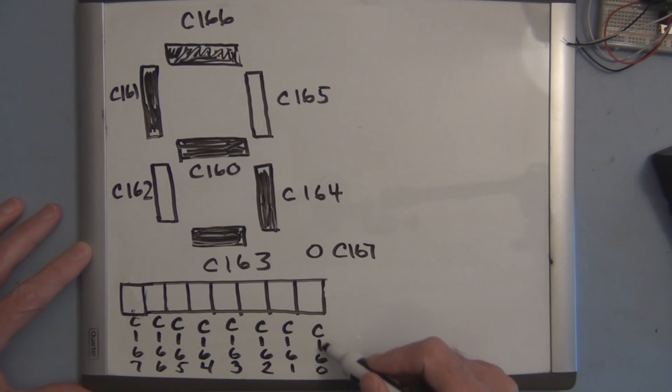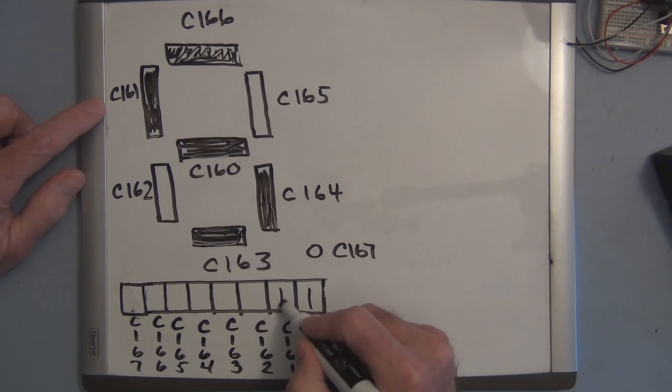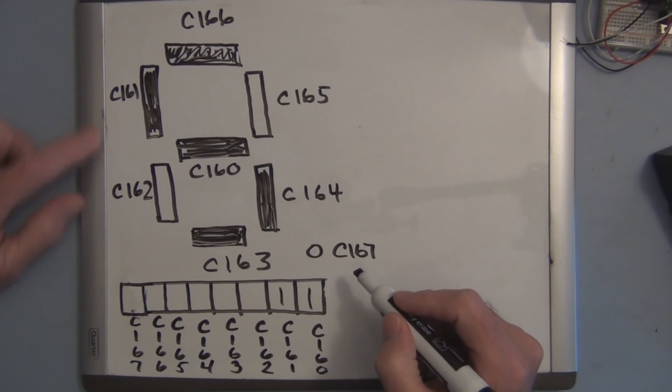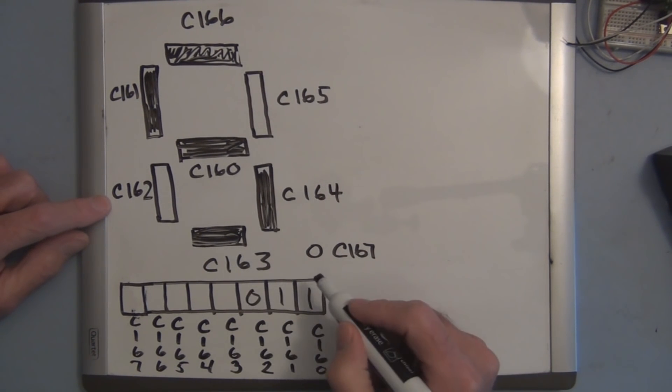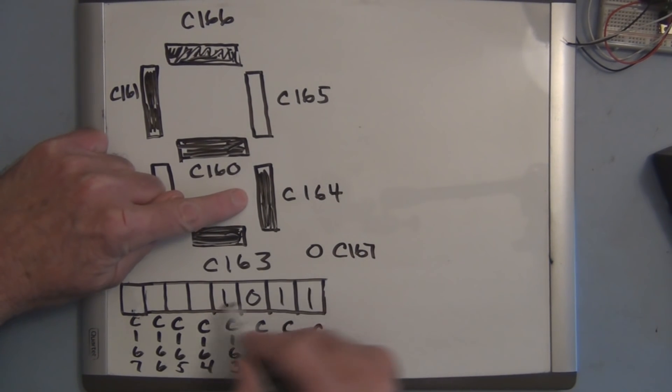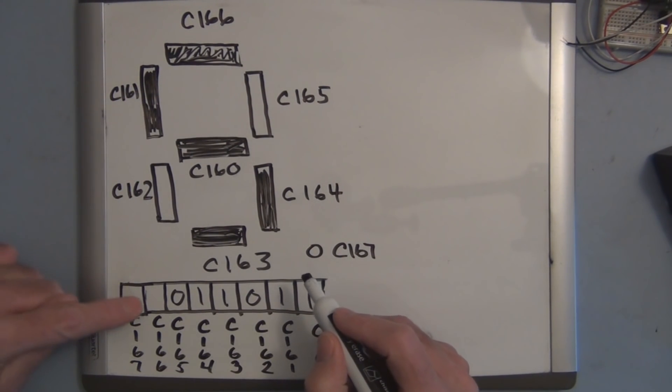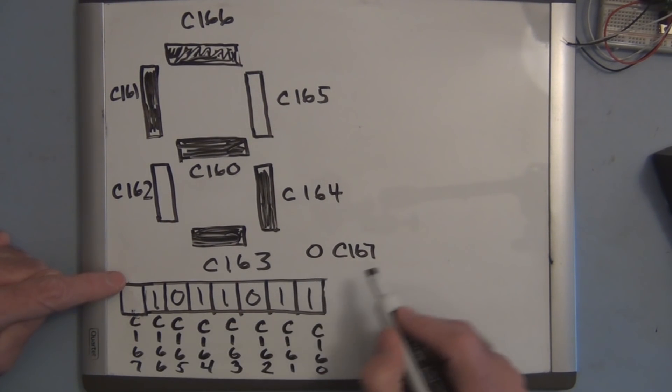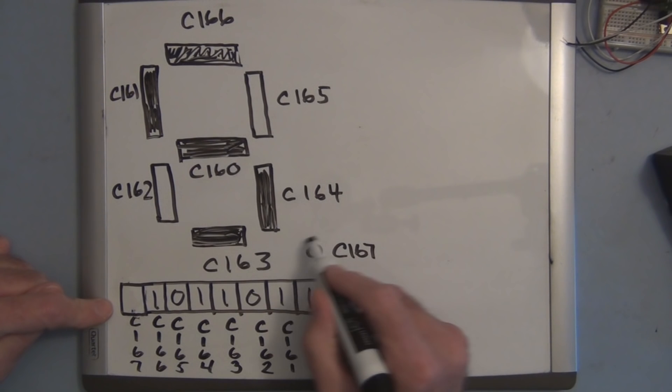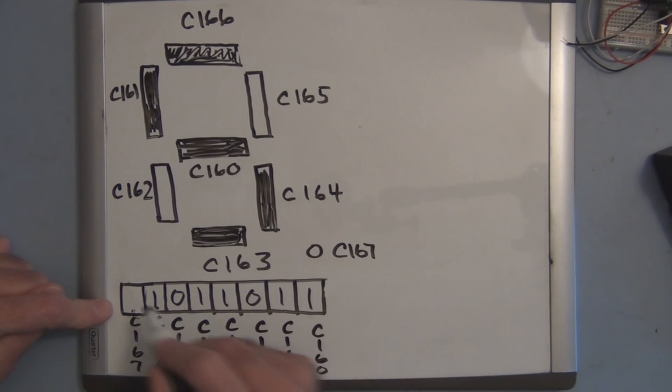So we would have C160, that would be a 1 in that position. 161 would be a 1 in that position, 162 is a 0, 163 a 1, 164 a 1, 165 a 0, 166 is a 1, and don't forget 167 which is the decimal point here, with a dot, and that's a 0.